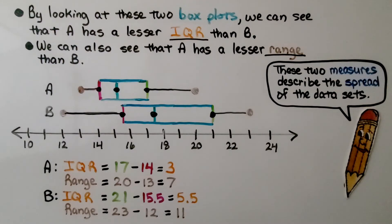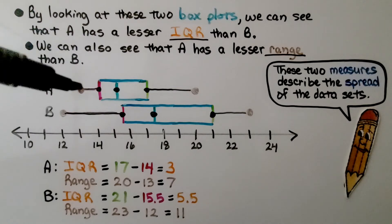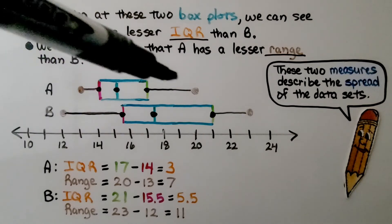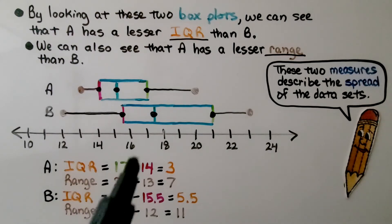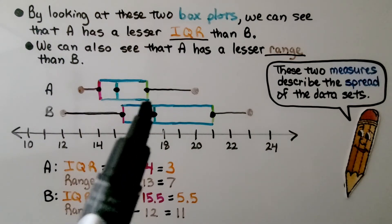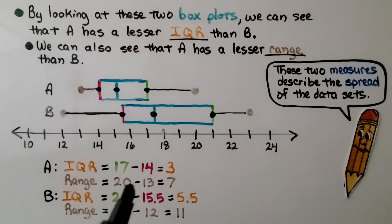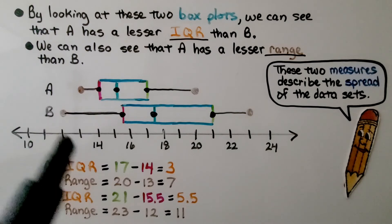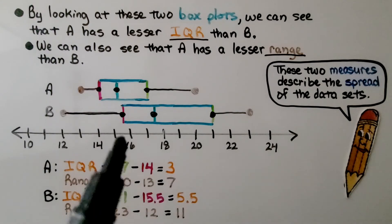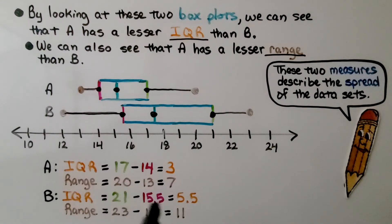By looking at these two box plots, we can see that A has a lesser interquartile range IQR than B. Its interquartile range is the difference between the upper quartile and lower quartile. We have 17 minus 14, that's 3 for the IQR. For B, it goes from 21 to 15.5. That's an IQR of 5.5.